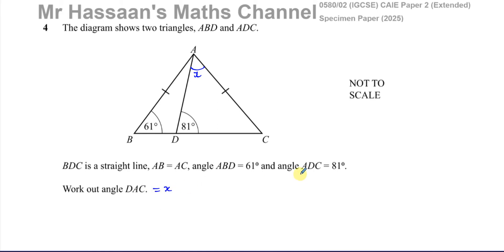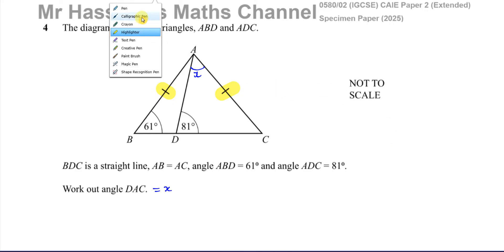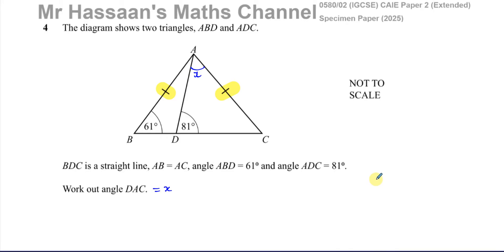To find angle X, we need to think about how to go about this. In this type of question, you think: why did they tell us that these two sides are the same length? That's going to have some bearing on the question. We can see that these two lengths are the same, which means triangle ABC is isosceles.